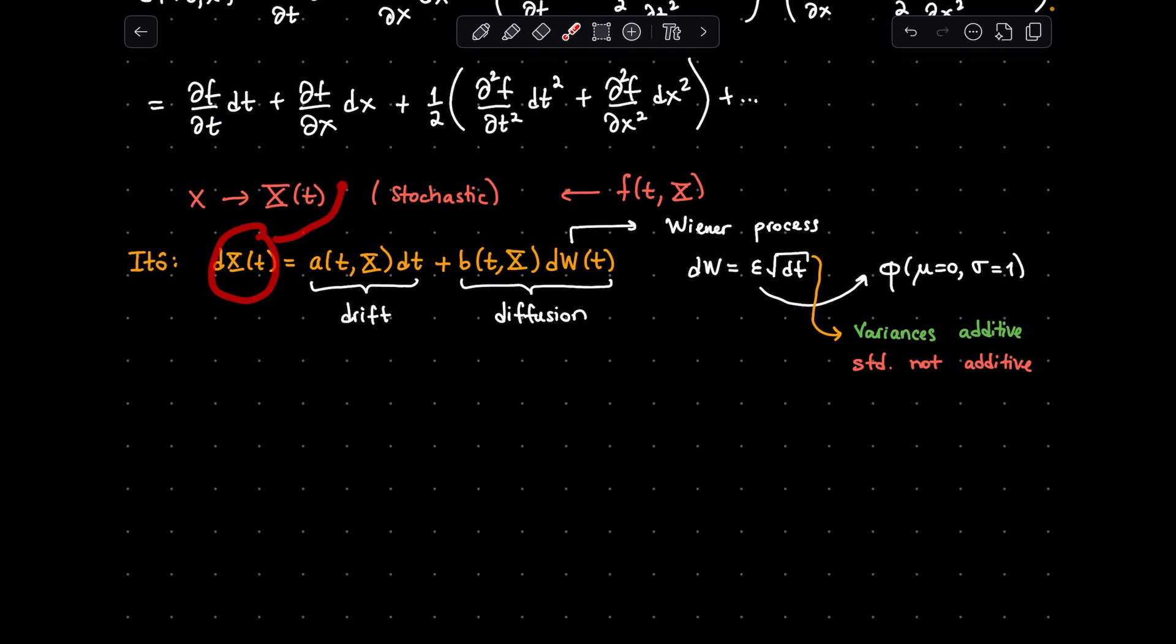Okay, now we just substitute this new stochastic x into our derivative. And for simplicity, I'm going to omit the arguments of a and b for now.